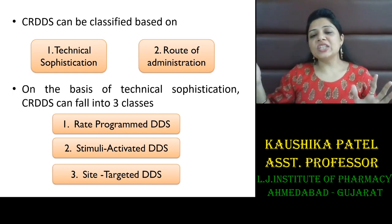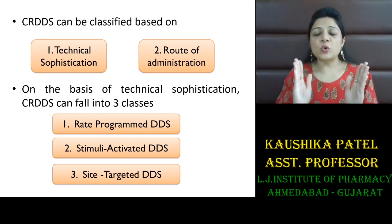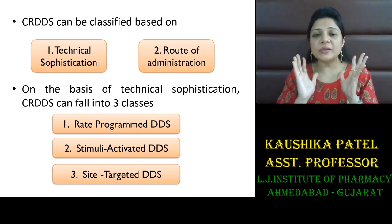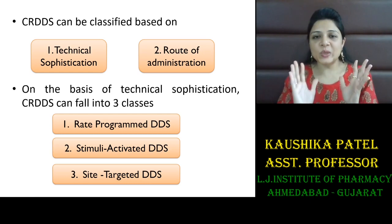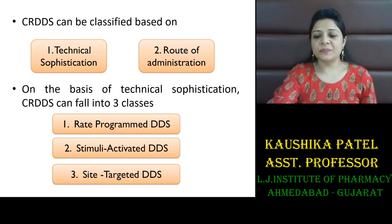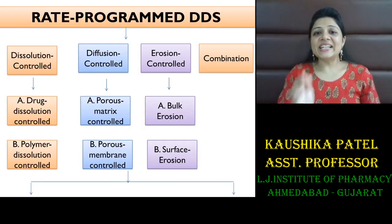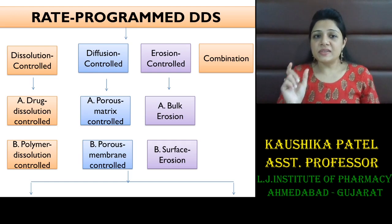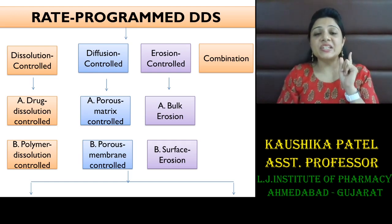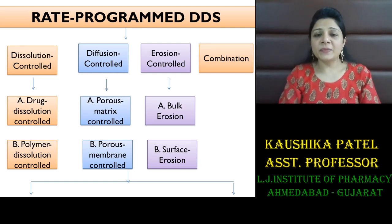Another option is you can change the route of administration. But if you want to go only for the oral route, then you can design the formulation by these three modes. When you are selecting a rate-programmed drug delivery system, that means you are determining and modifying the release rate of the formulation.